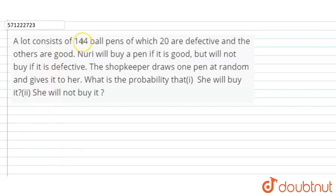A lot consists of 144 ball pens, of which 20 are defective and the others are good. Nuri will buy a pen if it's good, but not buy if it is defective. The shopkeeper draws one pen at random and gives it to her. What is the probability that she will buy it? The probability that she will not buy it?